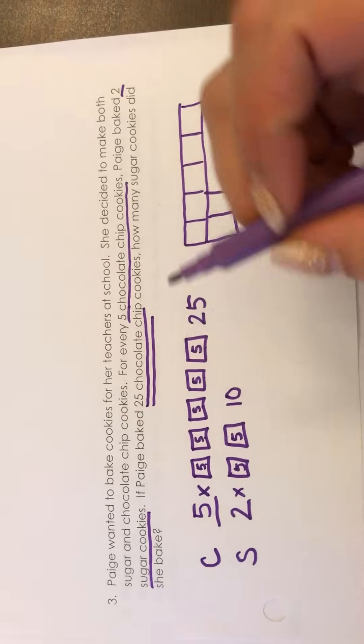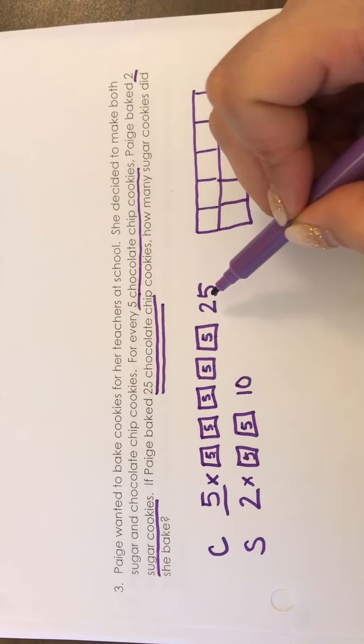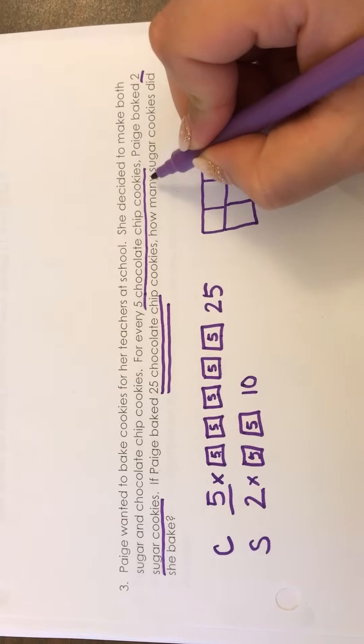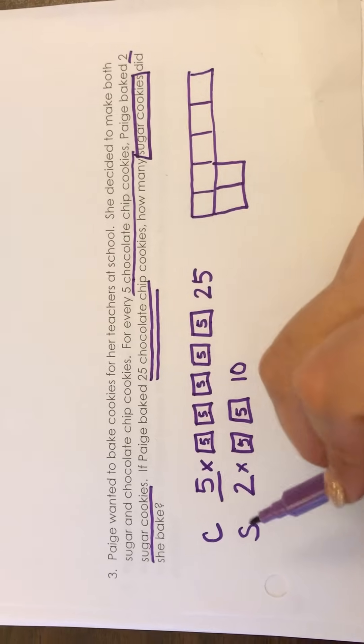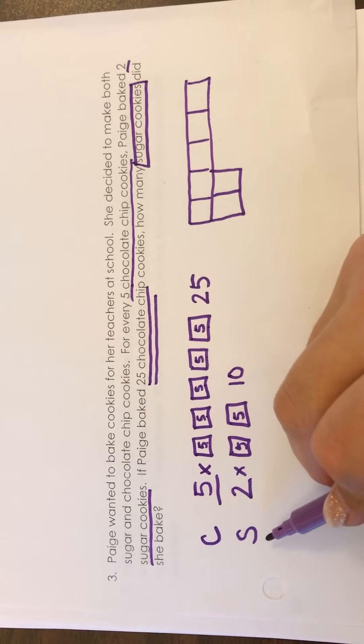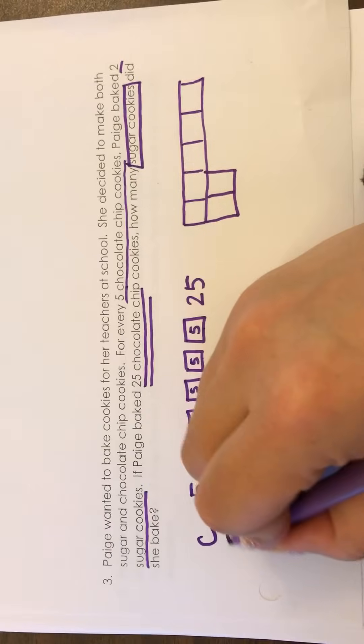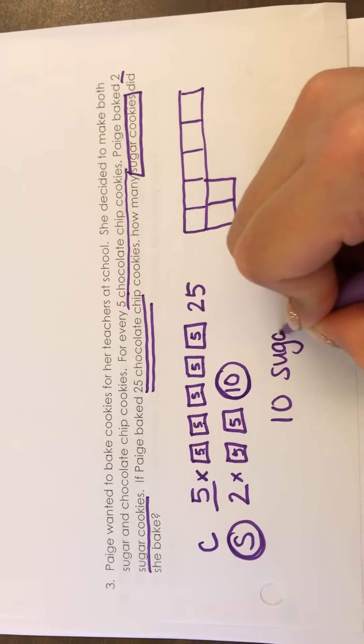So this diagram is just showing that for every 5 chocolate chip there's 2 sugar. Same thing over here for every 25 there's 10 sugar. So my question asks how many sugar cookies did she bake? Now all I have to do is look at my diagram and here's the S row for sugar. There's my answer. 10 sugar cookies.